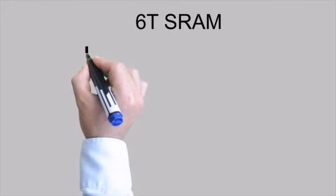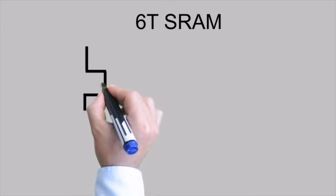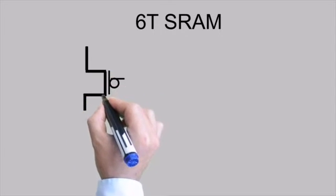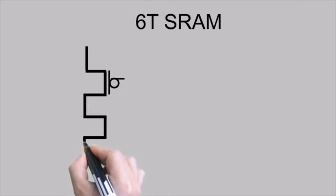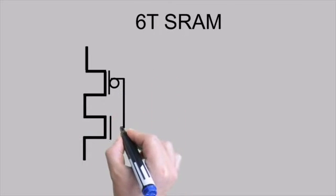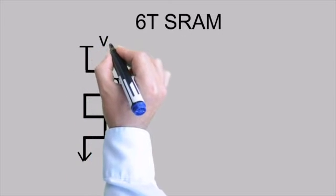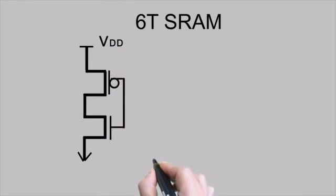We all know how to make a CMOS inverter. Let's go ahead and make that real quick. There's nothing but my PMOS and it will be connected with an NMOS. Both these inputs would be shorted together. This will be connected to ground and this would be nothing but VDD. This is my inverter number 1.